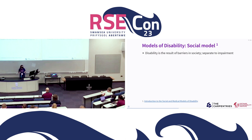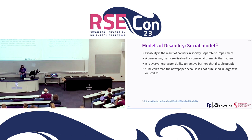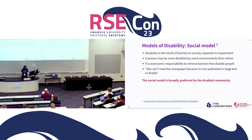Under the social model, disability is not intrinsic to a person but is the result of barriers in society — it's separate to any impairment you might have. A person may be more disabled by some environments than others. It's everyone's, society's responsibility to remove these barriers. A statement under the social model would be: 'she can't read the newspaper because it's not published in large text or Braille.' This puts responsibility onto the publisher rather than blaming a person for their impairment. The social model is broadly preferred by the disabled community, and it is also why I'm using the term 'disabled people' rather than 'people with disabilities' — because you are disabled by things beyond you.